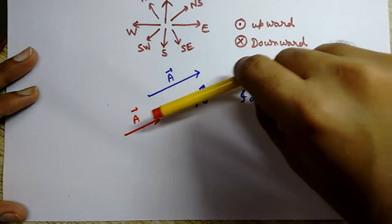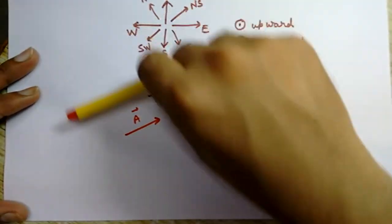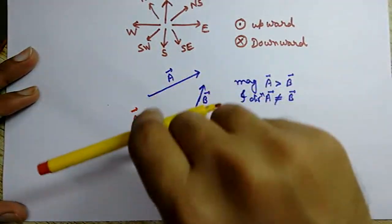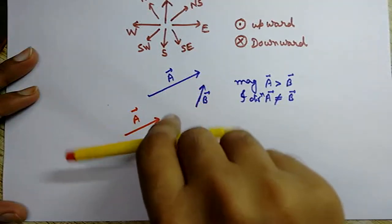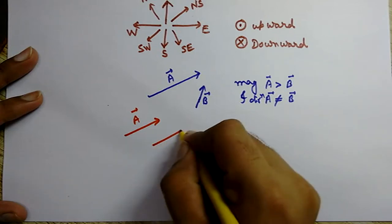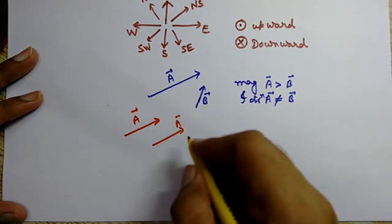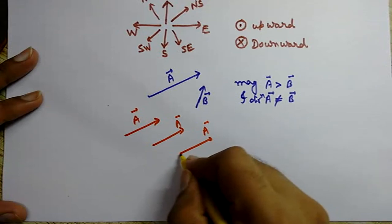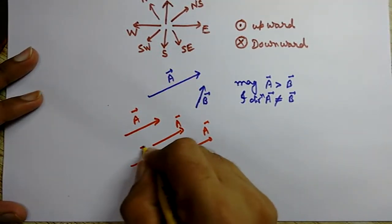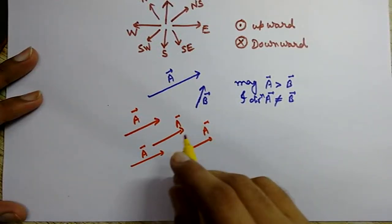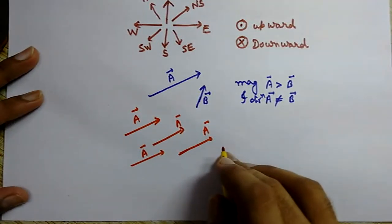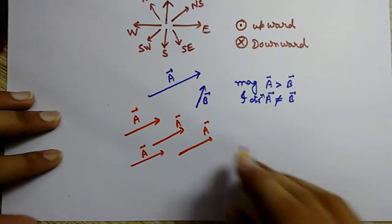So we can move the vector forward, reverse, upward, downward, or even perpendicularly — it does not change. But don't rotate it; it will change otherwise. So these parallel vectors all have equal magnitude and are the same vectors.